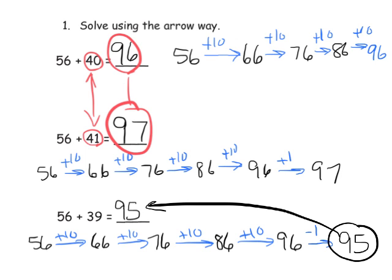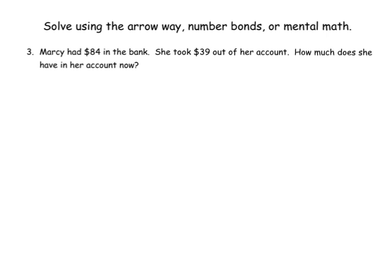So that is some concentrated practice using the arrow method. Now here, students are going to be given a choice of using either the arrow method, number bonds, or mental math. And this is one of those beautiful ways to differentiate your instruction. Let students choose how they want to do it. And then have this rich, wonderful conversation as a whole class on all the different ways that students used to solve this problem. Because there's probably six or seven different ways that students could have used their number sense to solve this problem. So Marcy had $84 in the bank. She took $39 out of her account. How much does she have in her account now?